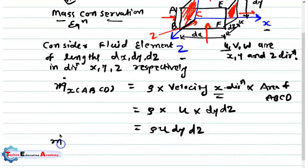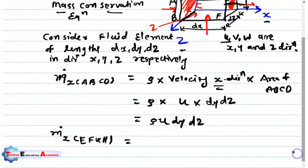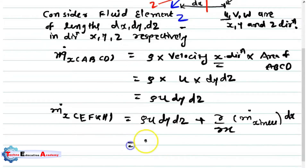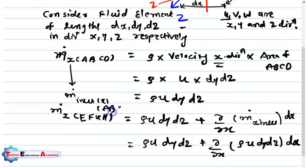Likewise, the mass in the x direction at the exit phase EFGH is the outlet condition. The exit mass flux is: ρ·u·dy·dz plus (∂/∂x)(ρ·u·dy·dz)·dx. This represents M inlet at phase ABCD plus the change in mass along x. This term is the M inlet condition at face ABCD.